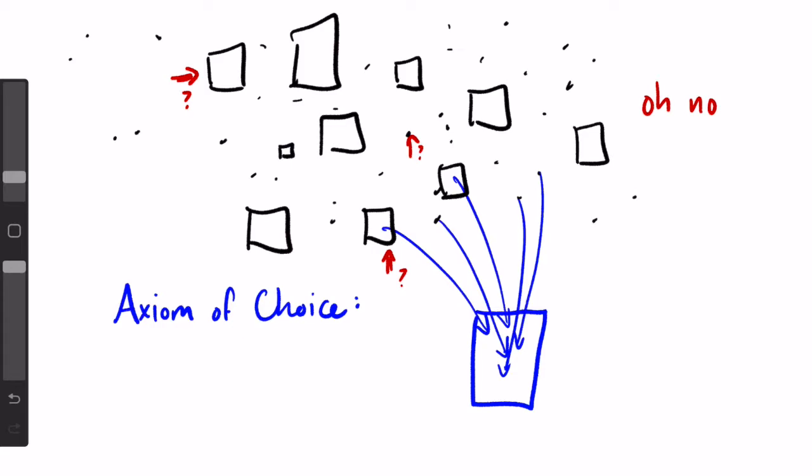This seems like a pretty intuitive idea, we should be able to pick elements out of sets no matter how many there are. That's why we accept the axiom of choice as an axiom. We can't prove it, but we want it to be true, and we want to use it to prove a bunch of other stuff later on.